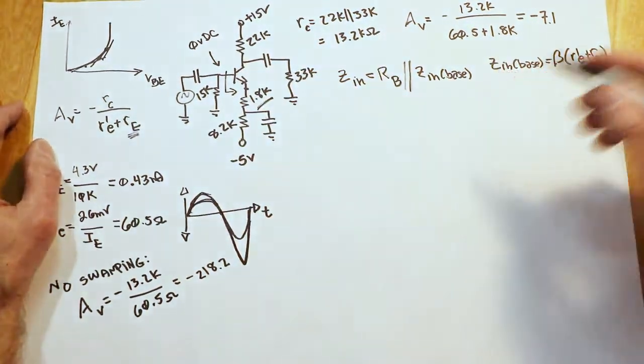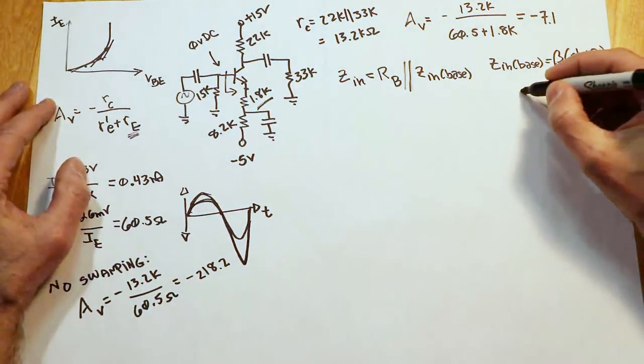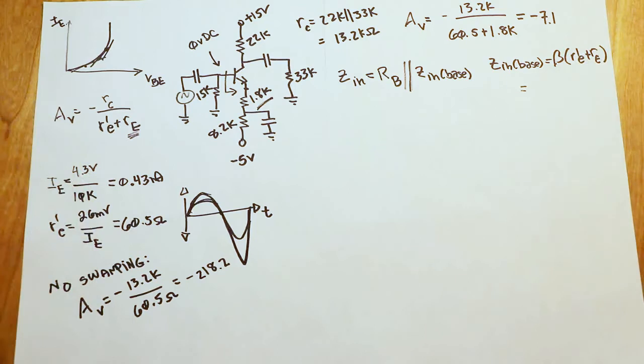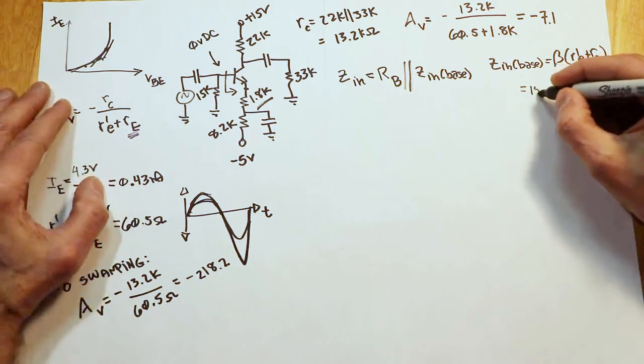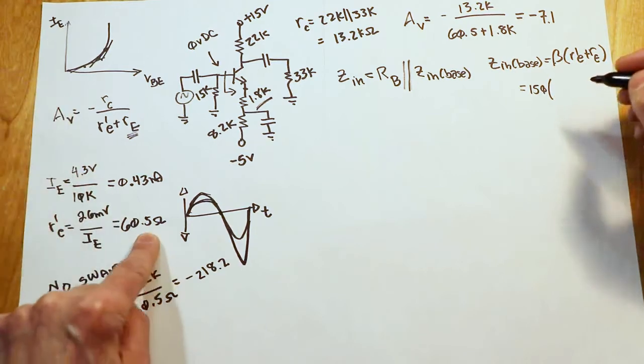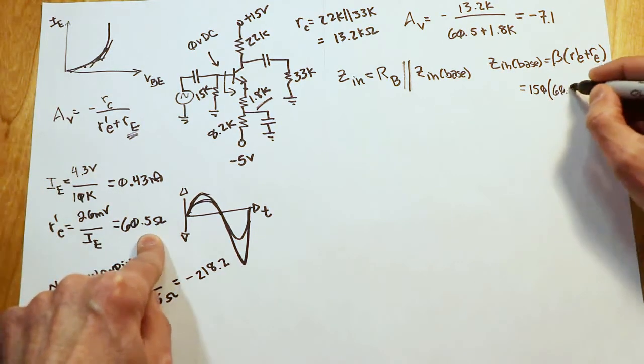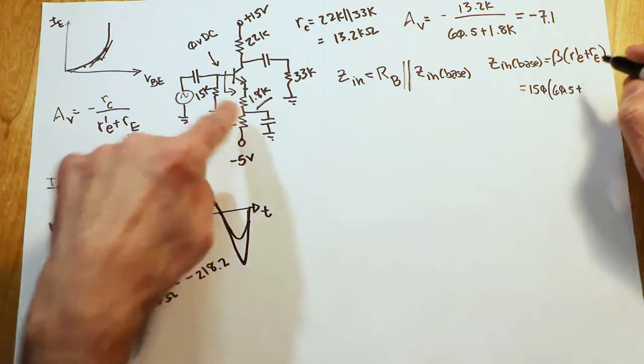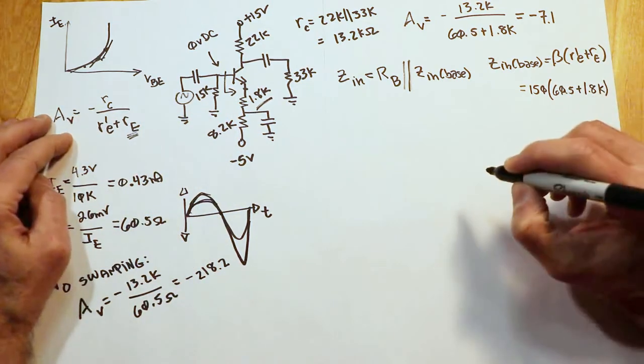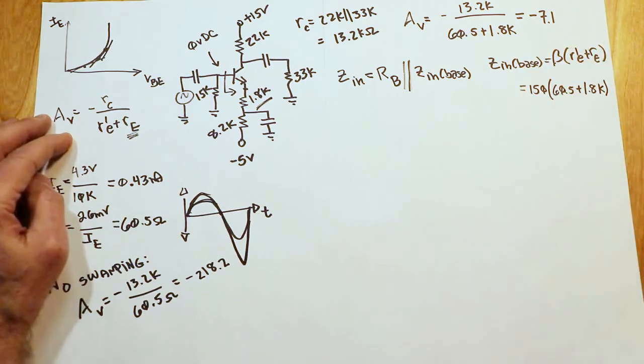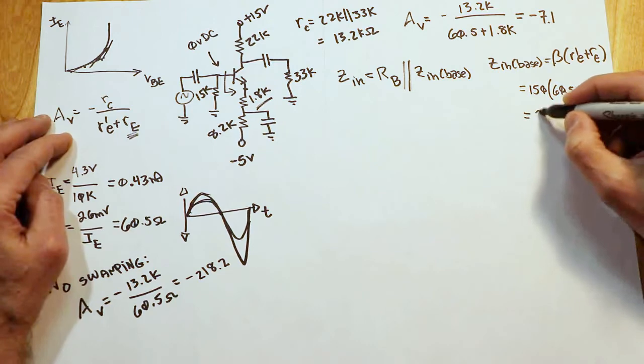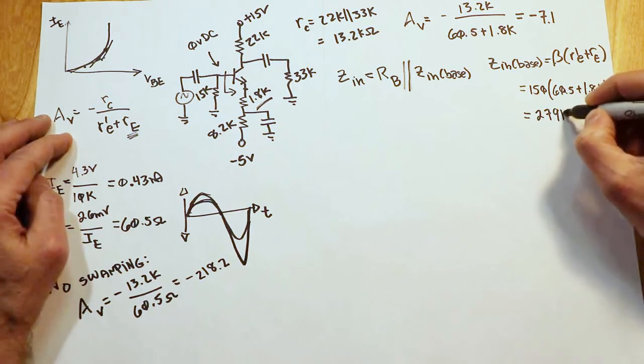In this particular case, what is our Zn base? Well, if we were to assume a beta of, what's a good beta? 150, for a transistor like this. Take 150, the R prime E is 60.5, the swapping resistor is 1.8 K. So we multiply this out, and the Zn base is going to work out to 279 K.